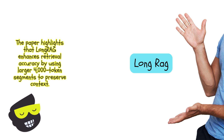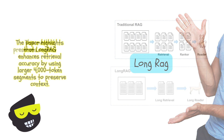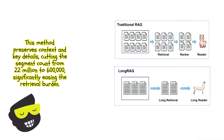This is where Long RAG comes in — a paper from 2024. The paper highlights the benefits of processing longer document segments to retain context and improve accuracy. The way it works is very simple: we break documents into 4,000 token units. This keeps most of the information intact — that's about 3,000 words, which would take roughly 25 to 30 minutes to speak. This helps to preserve context and avoid the loss of important details.